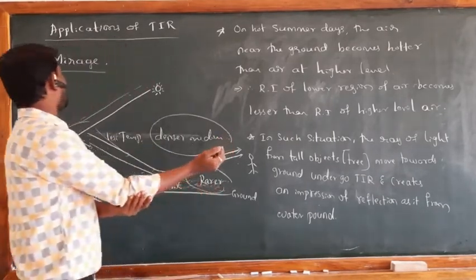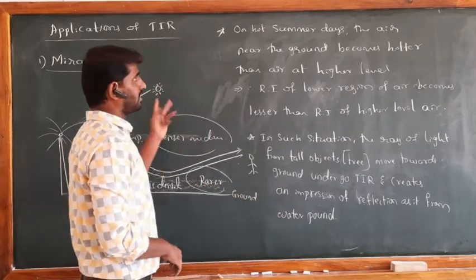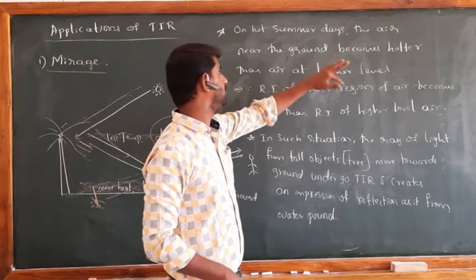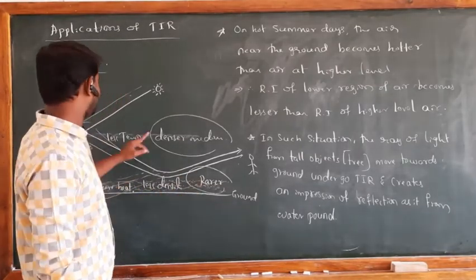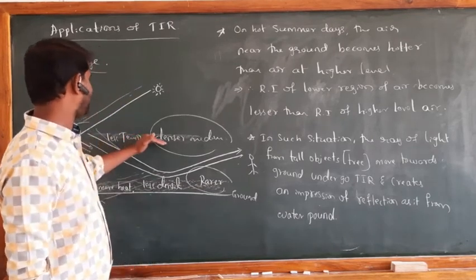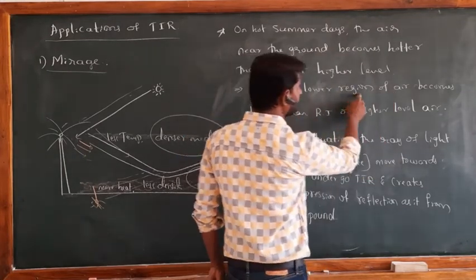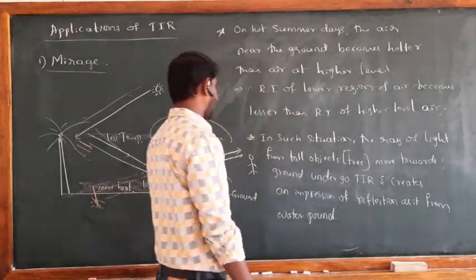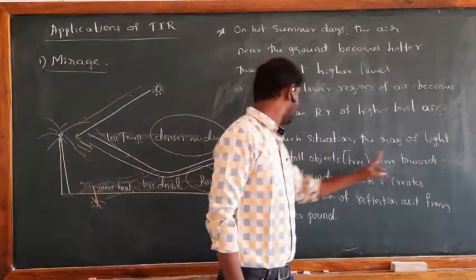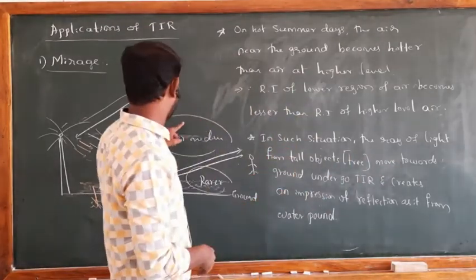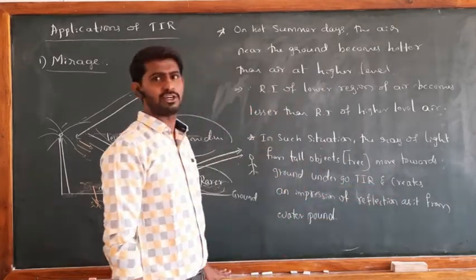To summarize the mirage explanation: on hot summer days, the air near the ground becomes hotter and less dense — a rarer medium — while the upper air is cooler and denser. The refractive index of the lower region becomes less than that of the higher level. Rays from tall objects like trees move towards the ground, passing from denser to rarer medium, undergo TIR, and create the impression of a reflection as if from a water pond.